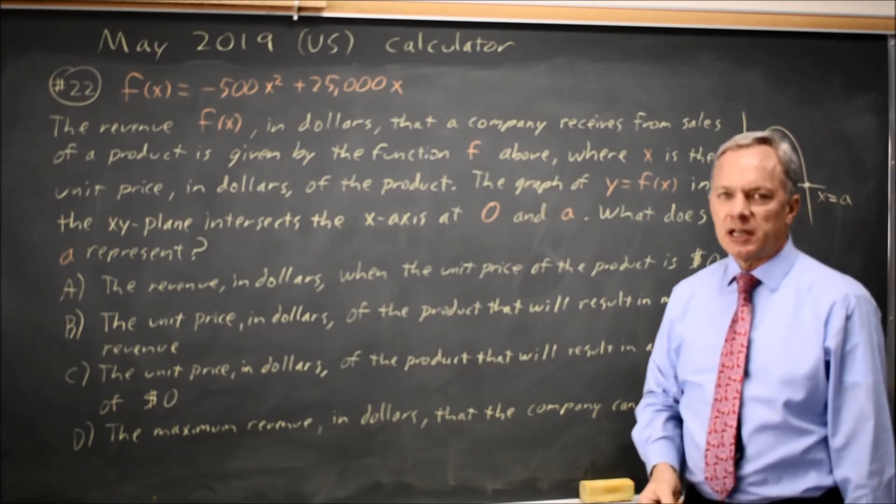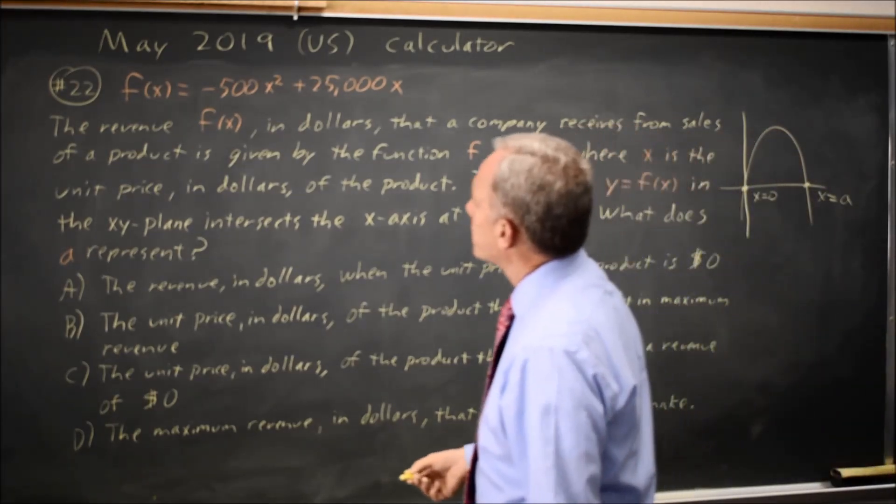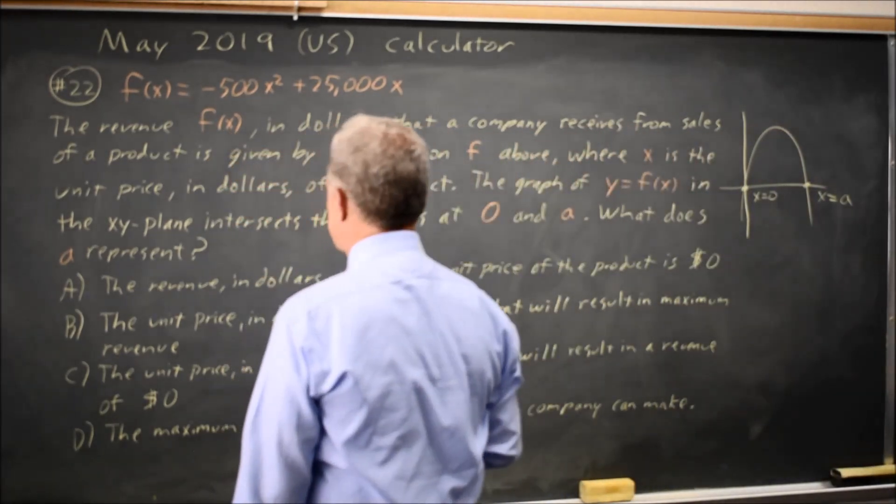And since we're intersecting the x axis, those are y values of 0 where y equals f of x. The revenue is 0 at those two points.